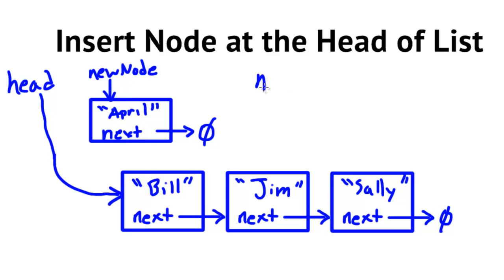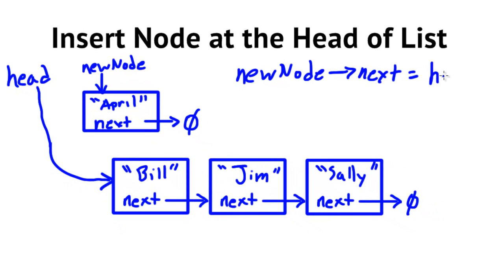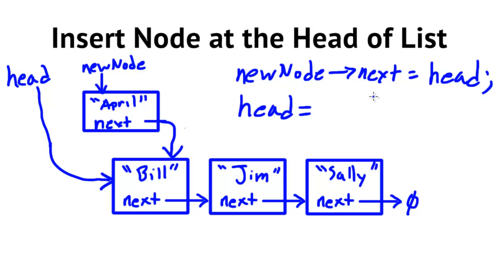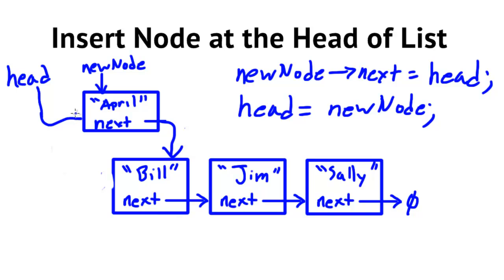To make new node's next point to Bill, we use the address held by head, since head is pointing to Bill. The code would be: new node's next is set to head. Once we do that, new node's next is pointing to Bill. Then the next thing we need to do is update head, so head simply points to whatever new node is pointing to.